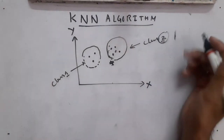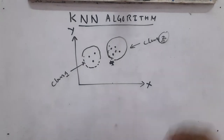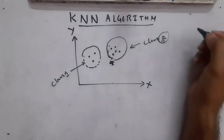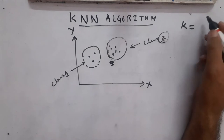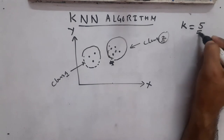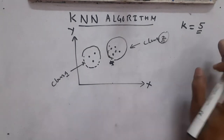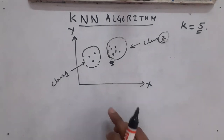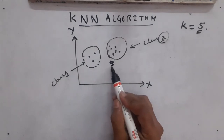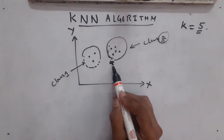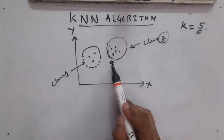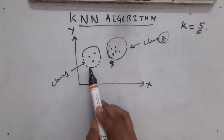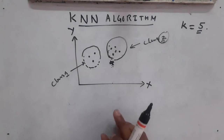So how does this KNN algorithm work? For this example, the first step is to identify the value of k — this is chosen somewhat arbitrarily. Assume I have taken k as 5. The second step is: given this new data point, we are going to identify whether it belongs to Class 1 or Class 2.